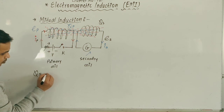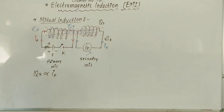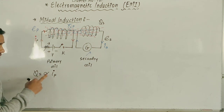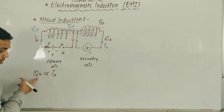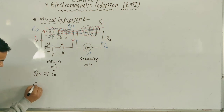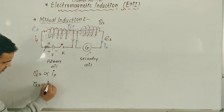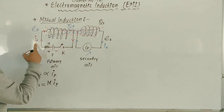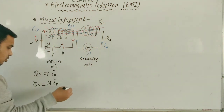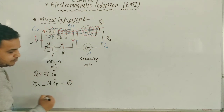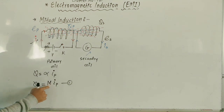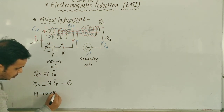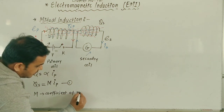The flux of the secondary is directly proportional to the current in the primary. Now using a constant, the flux of the secondary changes — and this is happening because of the primary current. As the primary current changes more, the flux of the secondary changes more, and more EMF is induced. So I use a constant called M, which is called the coefficient of mutual induction, and I_P is the current in the primary circuit. So: Phi_S = M × I_P — this is equation number 1.